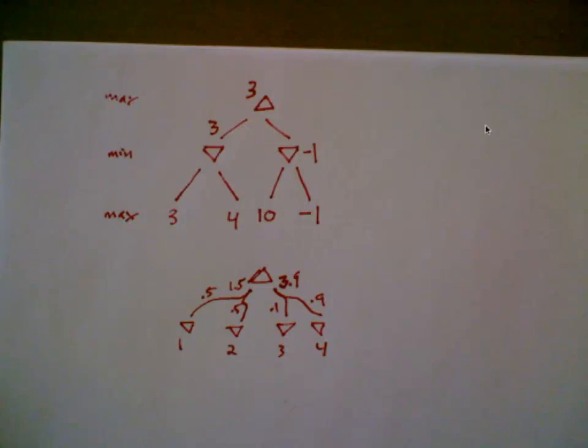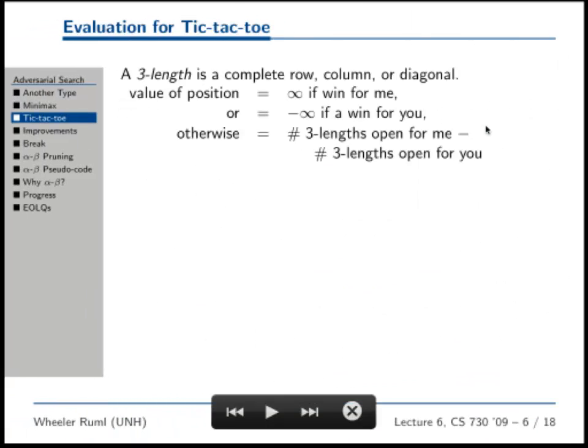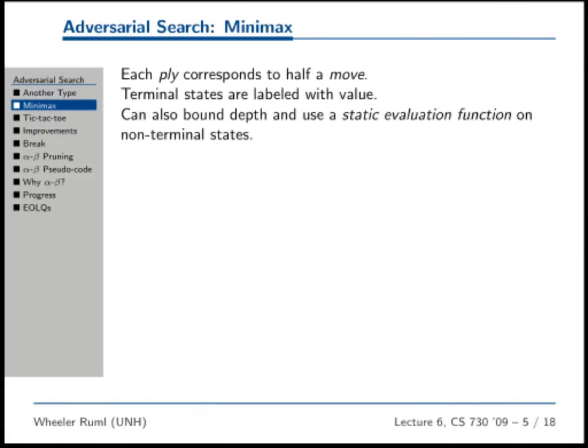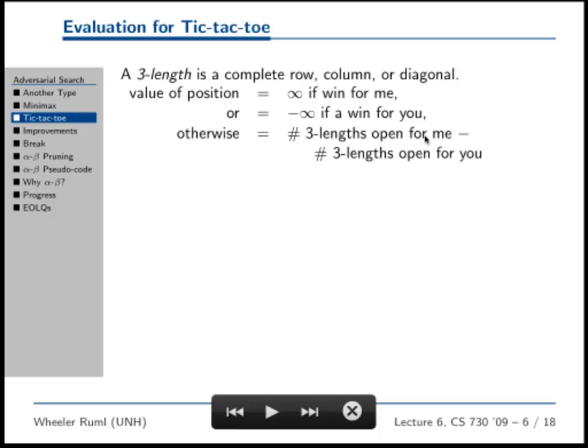There's a speedup to minimax search called alpha-beta pruning, and that's my goal: to have you understand that by the end of the lecture today, alpha-beta pruning. Any more questions? All right, so let's not skip all of these slides. So yeah, here I have static evaluation function written right there. So let's just do an example with tic-tac-toe just so you see minimax search going.